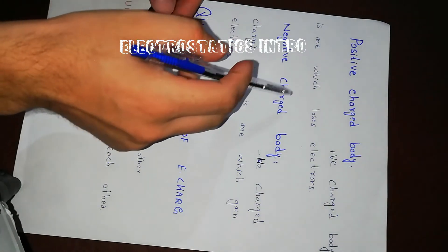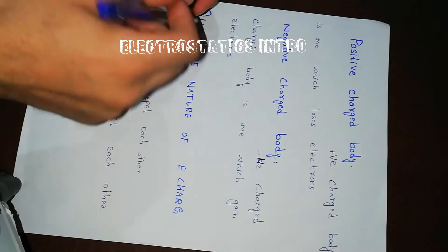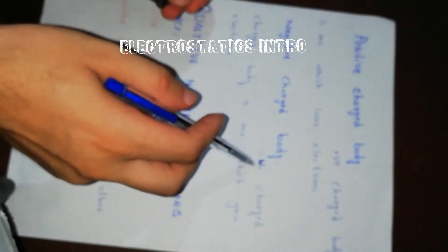Positive charge bodies are those which lose electrons, and negative charge bodies are those which gain electrons.